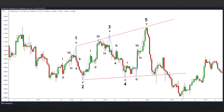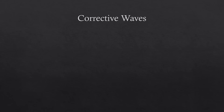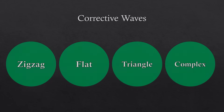Given these details about motive waves, we move on to corrective waves, which are more intricate and sometimes complicated. This is one of the disadvantages of the Elliott wave theory. There are mainly four types of corrective waves: the zigzag, the flat, the triangle, and the complex, which is a combination of zigzags, flats, and triangles.